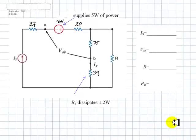Quiz 1, question 3. In this circuit, we know that this voltage source supplies 5W of power, and this resistor absorbs 1.2W. The units of the values by resistors are given in ohms. Let's begin.